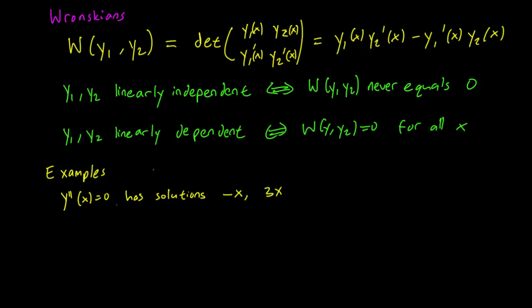The Wronskian of minus x and 3x is equal to the determinant of minus x to 3x. Those are the top row. And then we take the derivatives for the bottom row, minus 1 and 3.